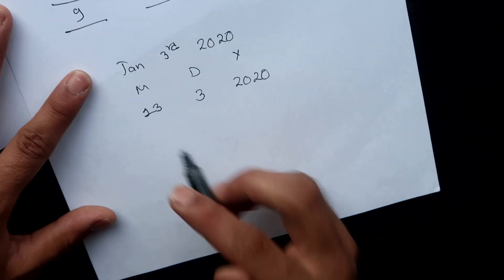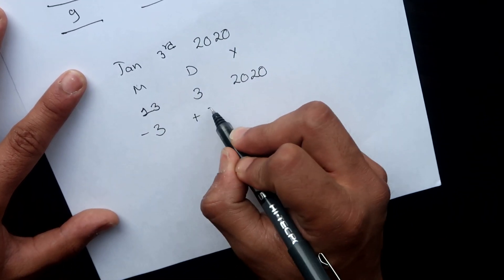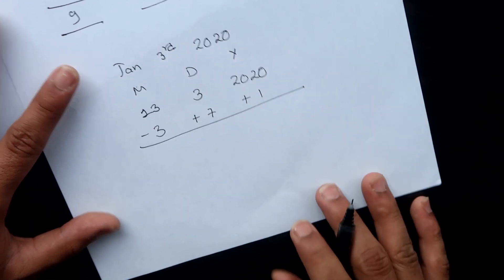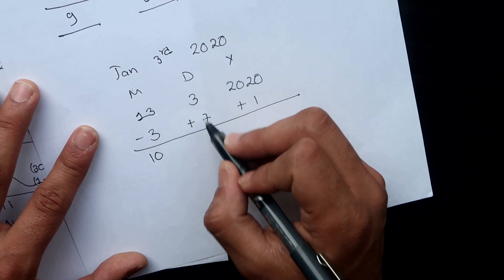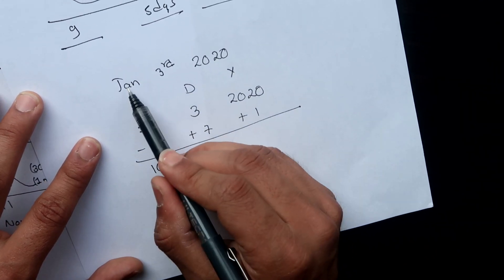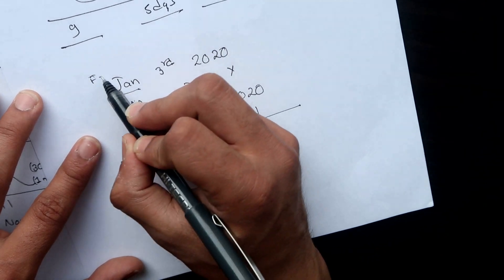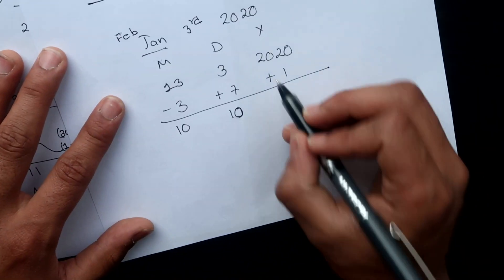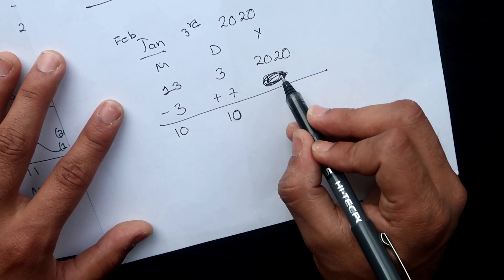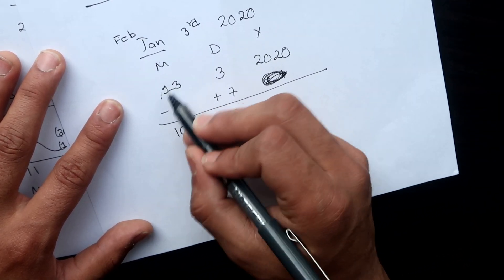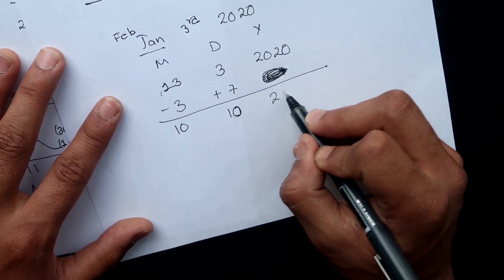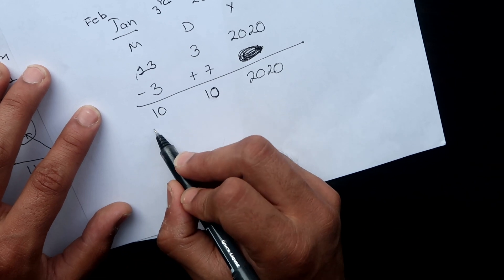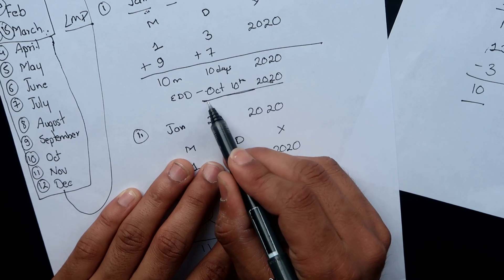Subtract 3 from month 13: 13 − 3 = 10. Add 7 to days: 3 + 7 = 10. For January, February, and March, do not add one to the year, because the extra year has already been absorbed by renaming the month. So the year stays 2020. The answer is Month 10 (October), Day 10, Year 2020 — October 10, 2020 — the same answer as before.